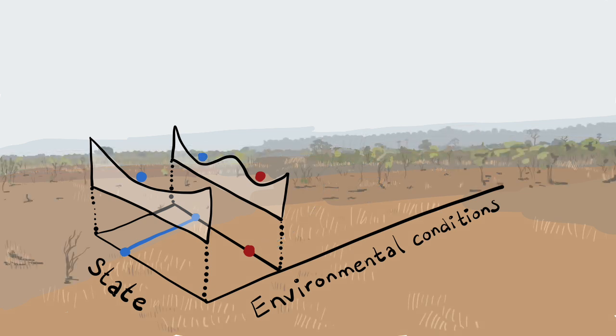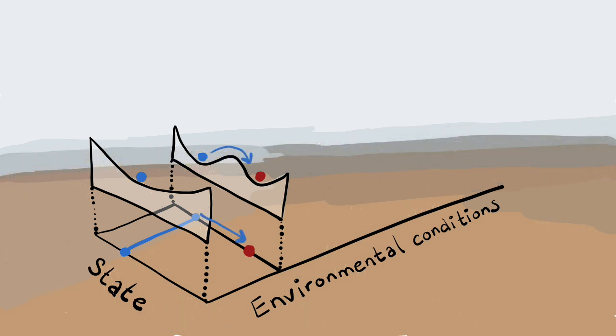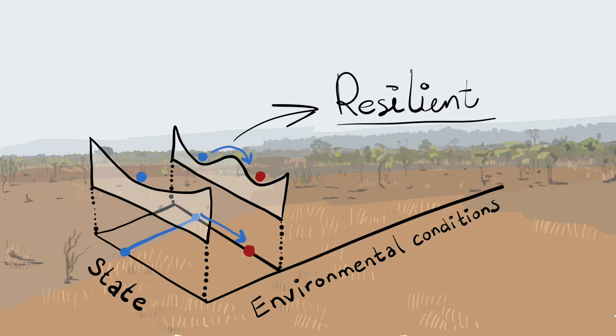Under these environmental conditions, only a very large disturbance can cause the ball to roll from one stable state to the other. So the system is resilient to disturbances.